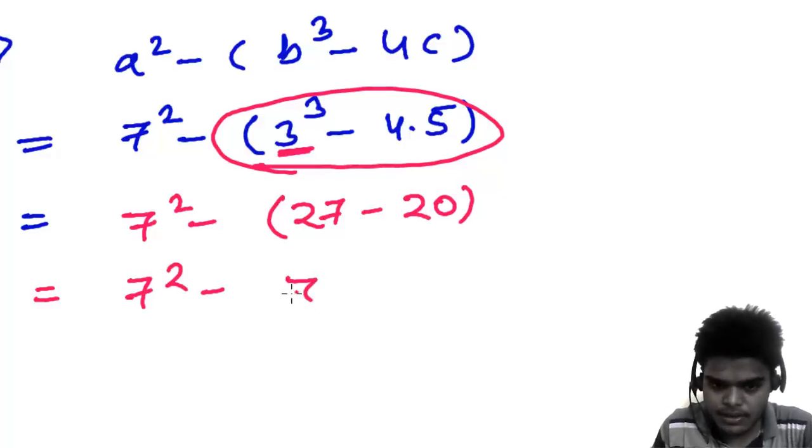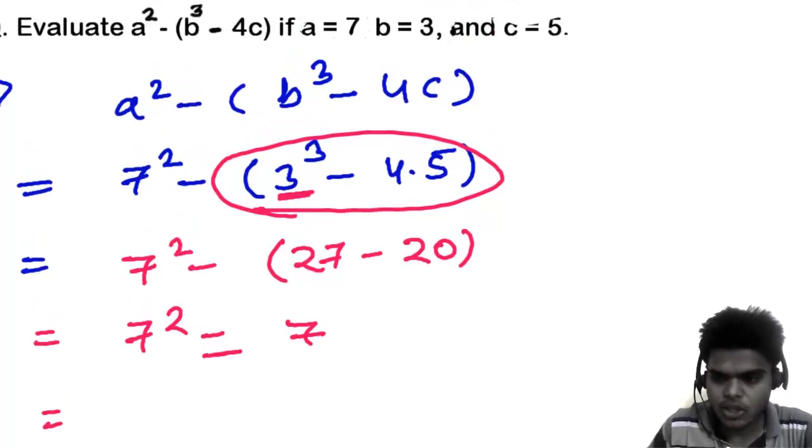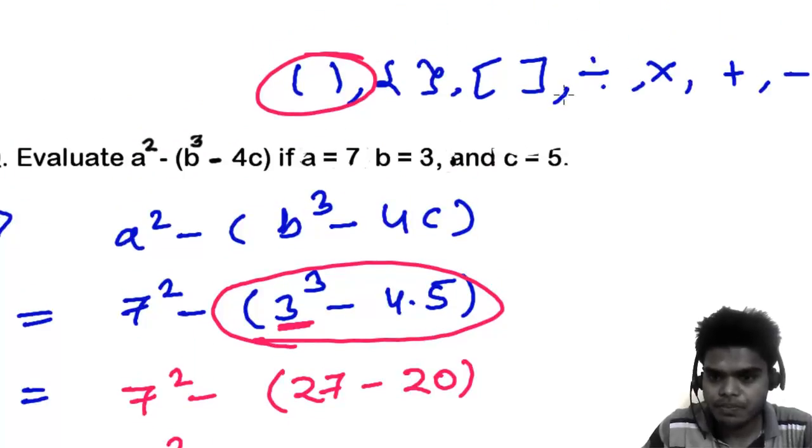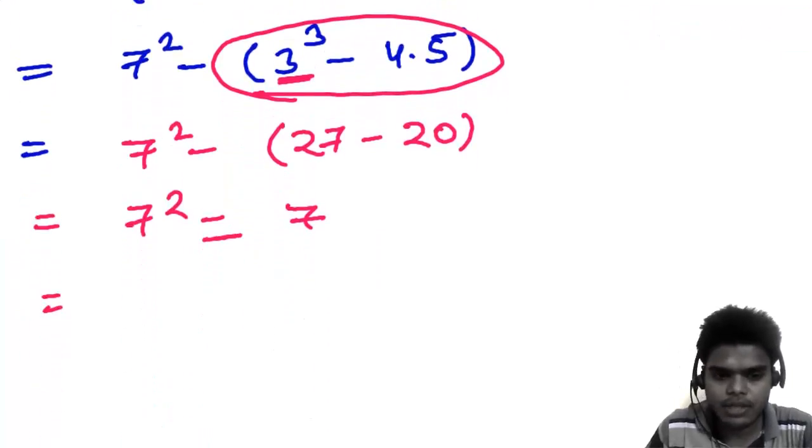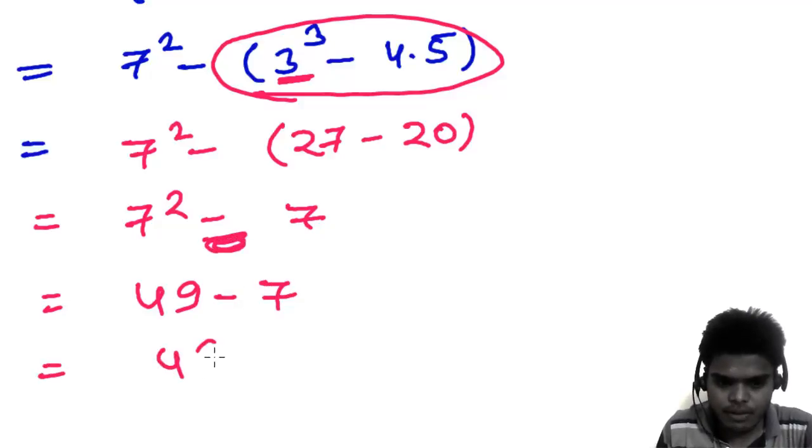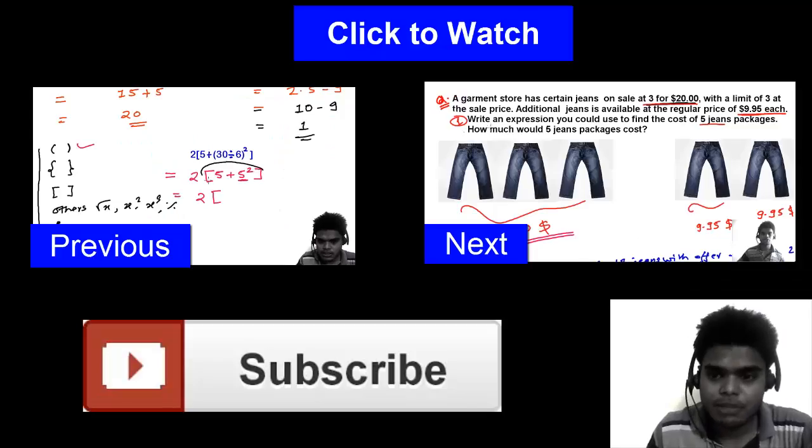So 7 squared. Now you have options - one is subtraction, another is others. So others comes first. If you go to BODMAS, it would be O-D-M-A-S. Subtraction is at last and others comes first. So 7 squared, that is 49, minus 7, so that is 42. So our answer is 42.